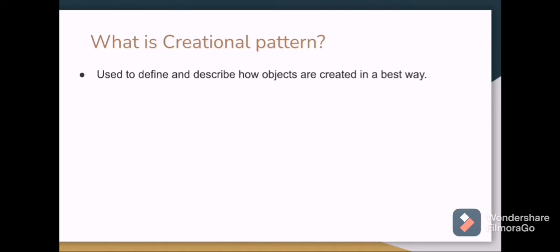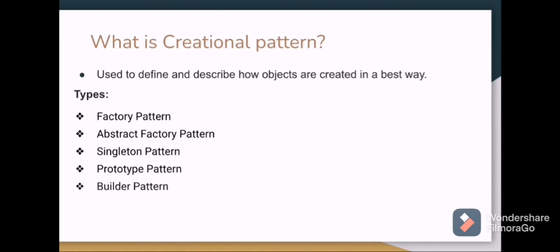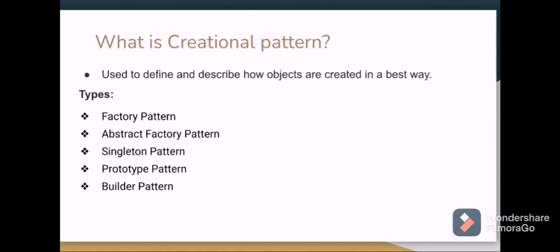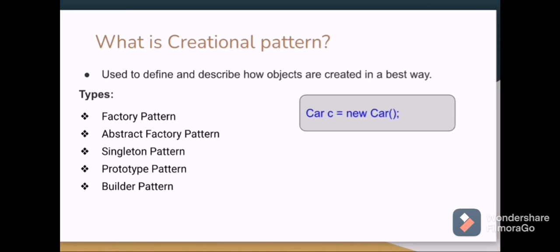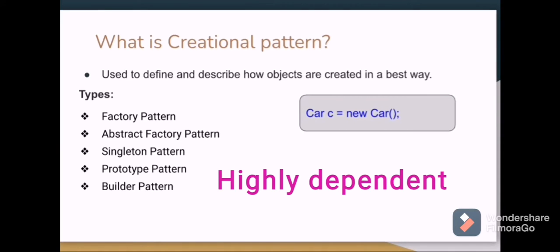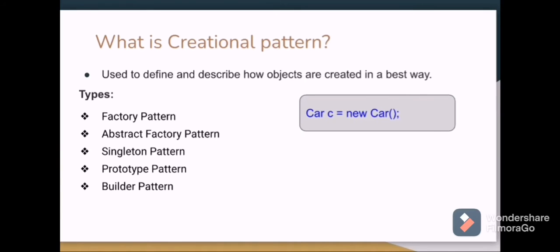What is a creational pattern? It is used to define and describe how objects are created. The types include: factory pattern, abstract factory pattern, singleton pattern, prototype pattern, and builder pattern. To understand this, consider we have a Car class. Normally we create an object using 'Car c = new Car()' with the new keyword, but the problem is that this is tightly coupled. Creational patterns help us follow strategies so that our code becomes loosely coupled.